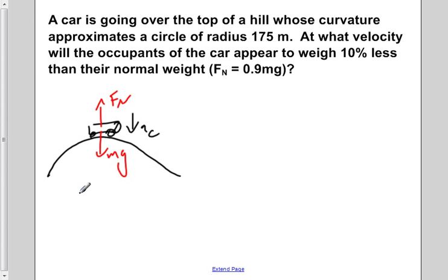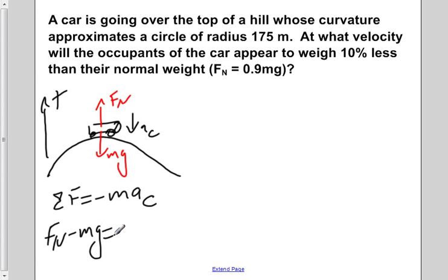If we now write Newton's Second Law for this situation, the sum of forces is equal to negative ma centripetal, because if we consider the up direction to be our positive, Fn is positive, mg is negative, and our a centripetal is then in fact negative. By doing this we would find that normal force minus mg is equal to negative ma centripetal.